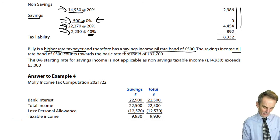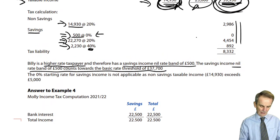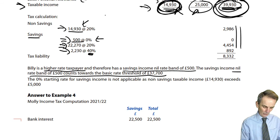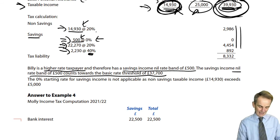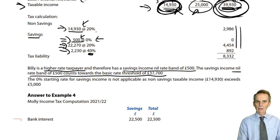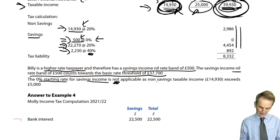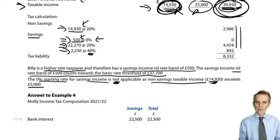The savings income nil rate band of £500 counts towards the basic rate threshold of £37,700. We take the £14,930 non-savings, then add the £500 savings income nil rate band to see how much basic rate band still remains. The 0% starting rate for savings income is not applicable here, as the non-savings taxable income of £14,930 exceeded £5,000.